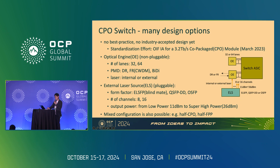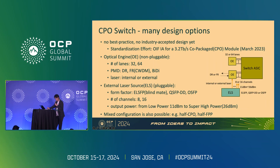Regarding design options: for optical engines, there are choices like whether to have 32 or 64 lanes, and whether to use DR, FR, or even BiDi. Another option is whether to place the laser inside the optical engine or outside. If you choose an external laser source, you need to decide the form factor — whether it's ELSFP, QSFP-DD, or OSFP — and determine whether to use 8-channel or 16-channel laser sources and what output power level is needed. It's even possible to mix CPO and pluggable modules, for example mounting optical engines on half the switch ASIC lanes. There are still many design options, and the software needs to accommodate this flexibility.